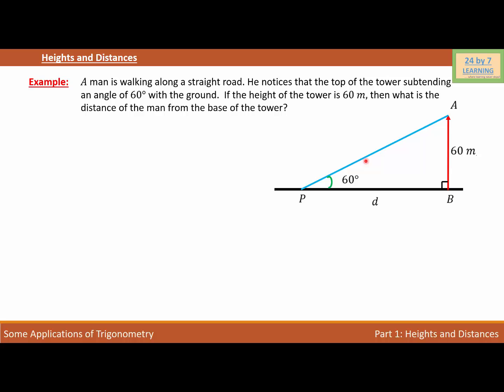As you can see, this is a right triangle. Triangle APB is a right triangle. When this is a right triangle, I have angle P given and the height is given, so I'm going to use the function of tangent.